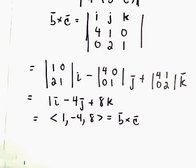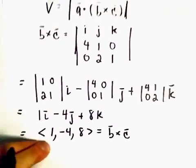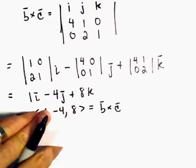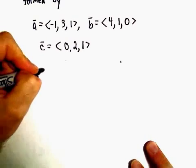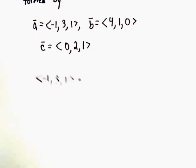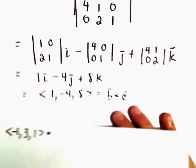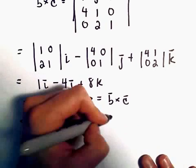All right, so what we have to do next is simply dot this with our vector A. Vector A has components ⟨-1, 3, 1⟩. We're going to dot this with the cross product, which we said has components ⟨1, -4, 8⟩.